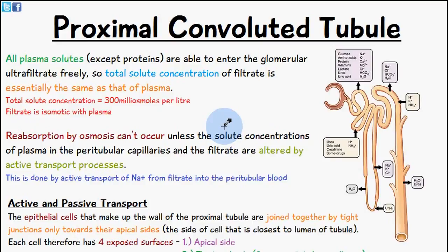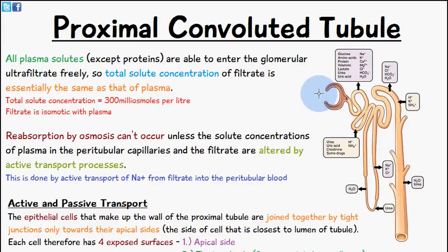Welcome to Five Minute School. Today's video we're going to be talking about the proximal convoluted tubule — specifically how reabsorption is occurring. The proximal convoluted tubule is this region here in the nephron. Blood initially arrives via an afferent arteriole to the glomerular capillaries, and what's inside these glomerular capillaries is blood, one constituent of which is blood plasma.